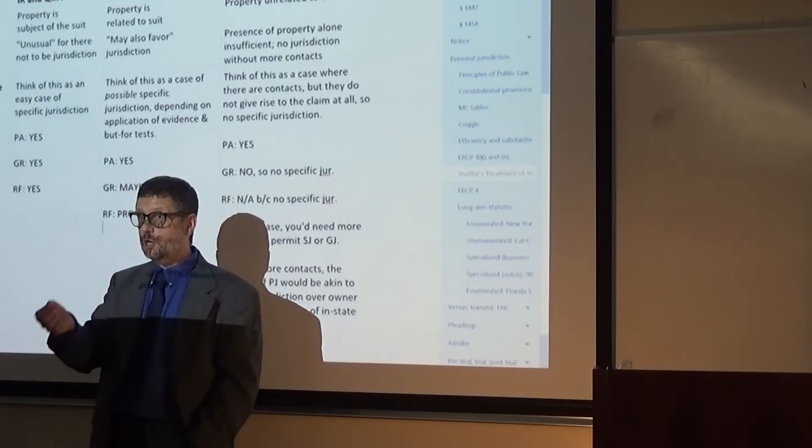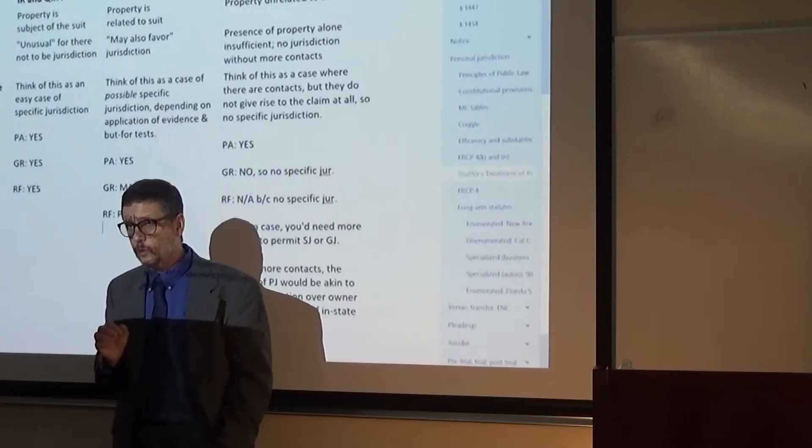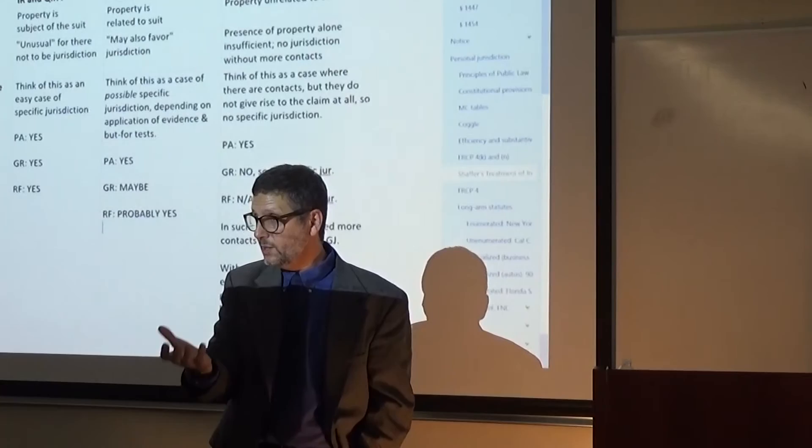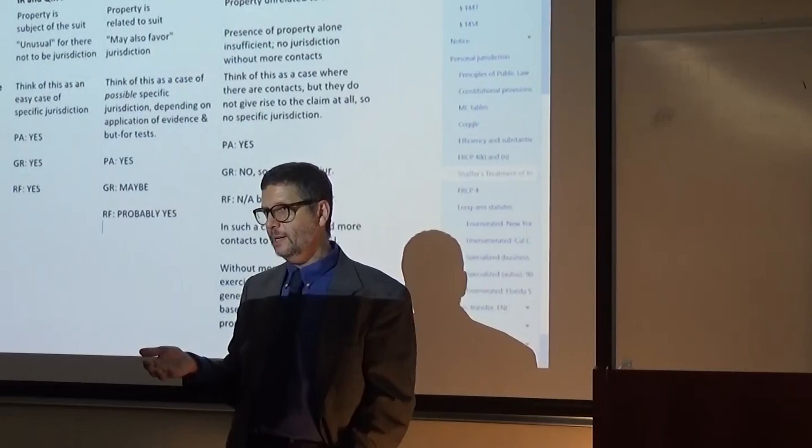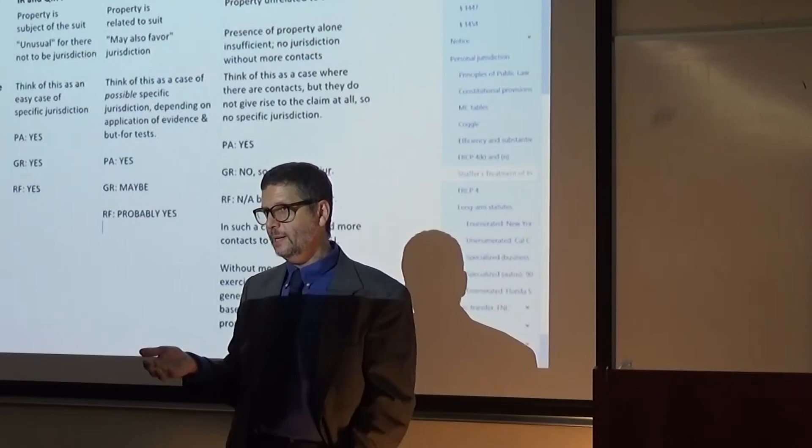The last thing I'll say about property and about PJ is there's some concurrences in Shaffer that say, well, if the property issue is real property, maybe we want to have jurisdiction over it because the property is in the forum state and not even worry about the contacts or about the minimum contacts framework. In other words, these concurrences said, for example, if there's real estate, real property in a state, then perhaps there should always be in rem or quasi in rem jurisdiction over it regardless of a lack of a relationship between the property and the suit. So that issue is kind of still out there. I don't think it's likely to be tested. That's it for personal jurisdiction. Let me stop the camera and we'll move into another issue.